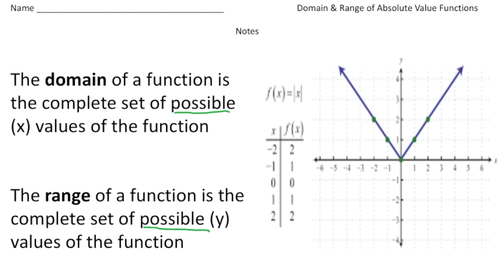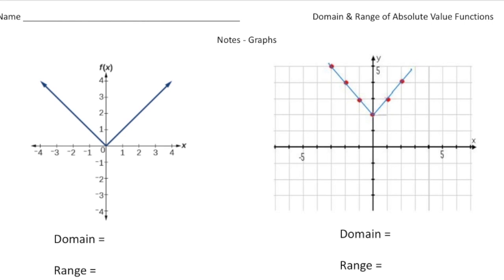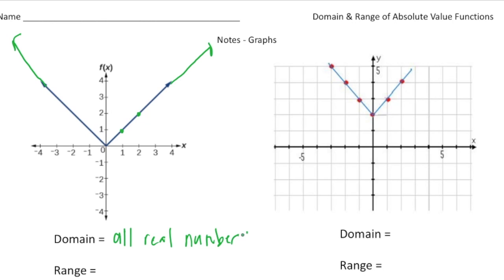Let's scroll down and determine the domain and range of two graphs and also two equations. Here we have an absolute value function, and let's figure out what the domain is going to be. Remember, the domain is going to be all the possible x values. The point right here would be x is 1, and the point right here would be x is 2, and so on. This line goes off in both directions forever, so no matter where we are on the graph, there's going to be an x value. That means the domain is going to be all real numbers.